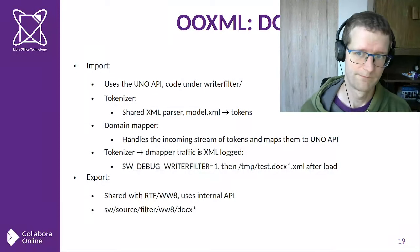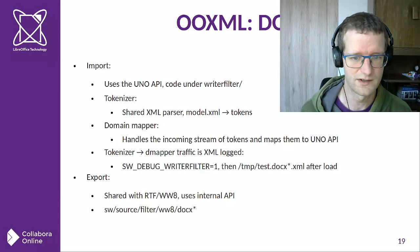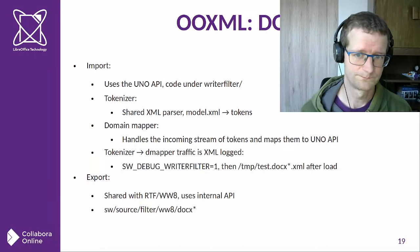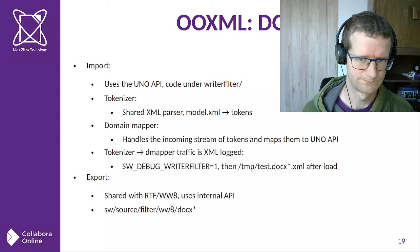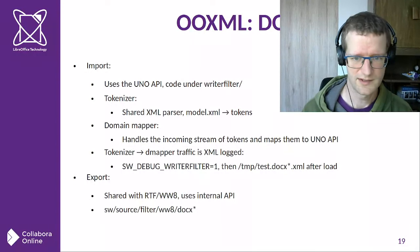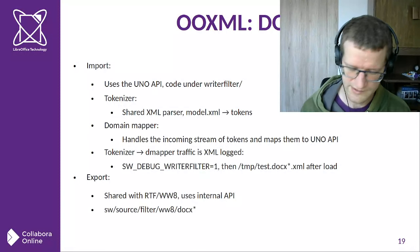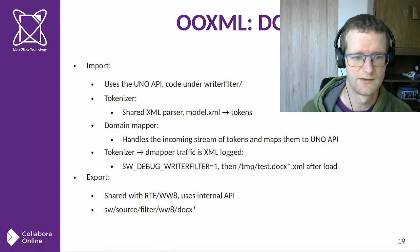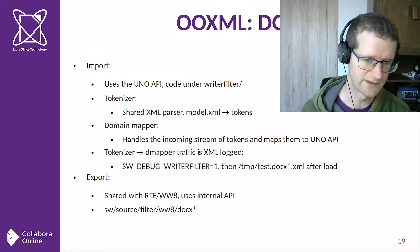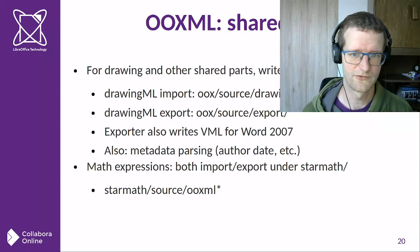DOCX is the other important filter because the majority of new Word documents are created in that format, and people expect that we read and write it. The import side is in the Writer filter and uses the UNO API; there is some code generation involved there, which I'll get to in a moment. It also has its own debugging output — the SW_DEBUG_WRITERFILTER_OUTPUT, which is an XML file that logs the traffic between the two steps of DOCX import: some tokenization and then handling those tokens. The export side has a much simpler architecture — it's a subclass from the binary DOC exporter, and it's just C++ code with no UNO API and no code generation.